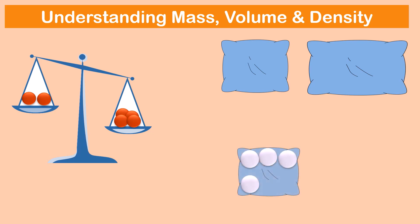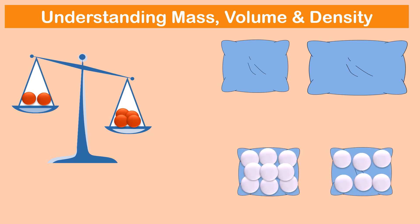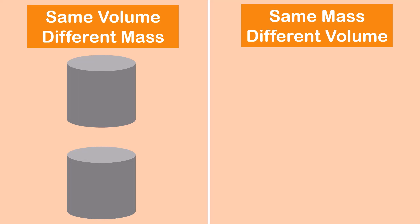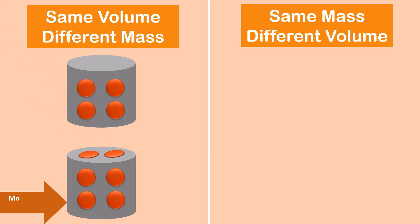So, density tells us how closely this mass is packed inside that object. If there are two objects of the same volume, then the one with more mass is said to have more density than the one with less mass.